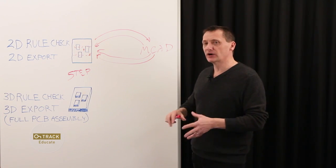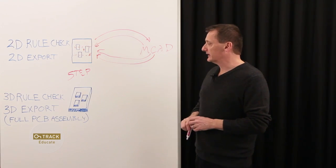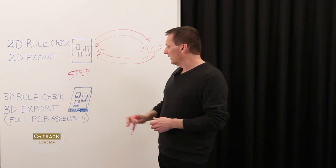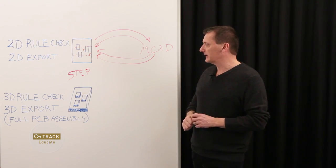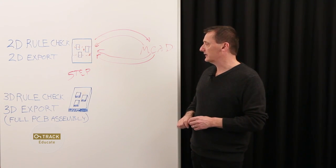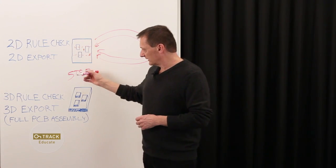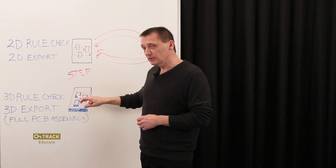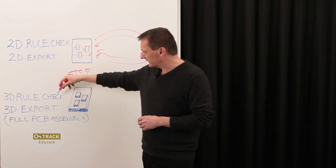You can work in their environment and export out a STEP model for anything as simple as a resistor and a capacitor component or as complex as an enclosure. Anything that can be designed in an MCAD tool can be exported as a STEP model. The designers would then take those STEP models, import those into the PCB components individually, and rule checking can then be done.